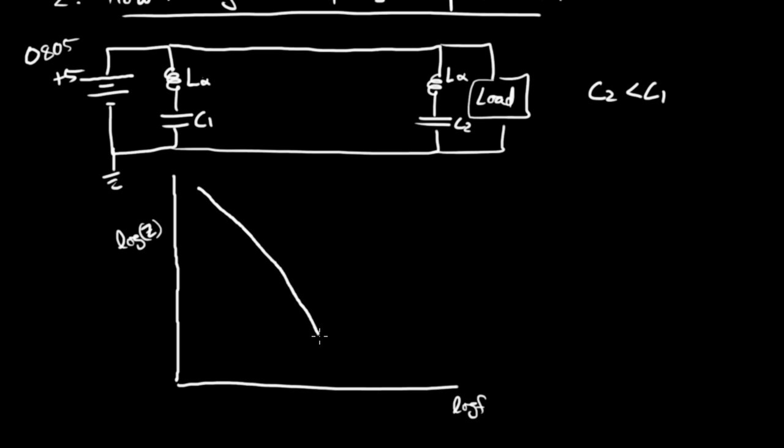It hits a trough at some point, which is the resonant frequency for that circuit, that LC circuit here, the series LC circuit, and then it comes back up like that. So that's C1.